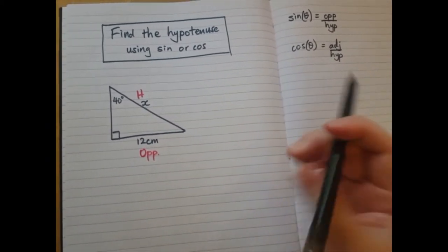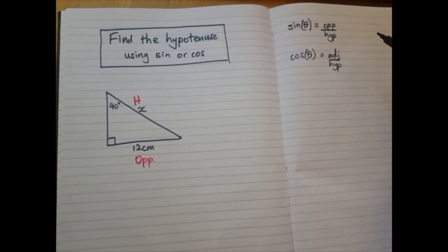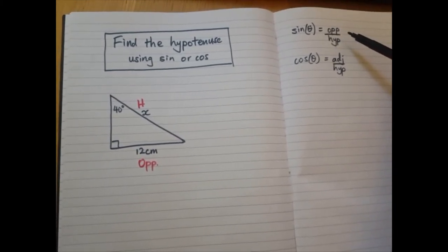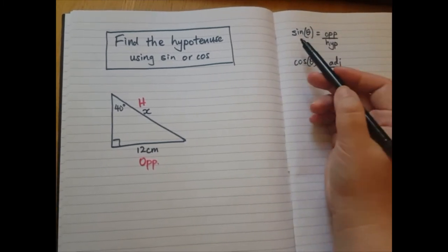So we now know that we are going to choose the formula that has opposite and hypotenuse. So it's this one. It's sine or sin. Okay. So let's write it down.